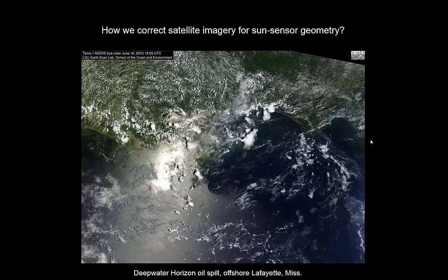The first thing we have to consider if we're trying to do that is the effect of the geometry between the Sun and the sensor on what we're observing. You see that in this image, which is an image over the Gulf of Mexico at the time of the Deepwater Horizon oil spill. In it you see a few important features. Of course you see the clouds and the cloud shadows — they're sort of the bane of optical surface remote sensing.